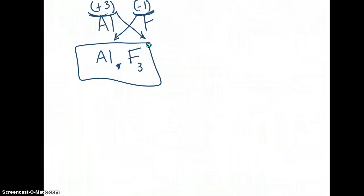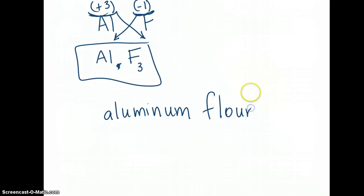Last part is actually naming these. These are easier than molecules to name. You always say the metal first. So this is aluminum. And then you say fluoride. You keep that 'ide' in there.